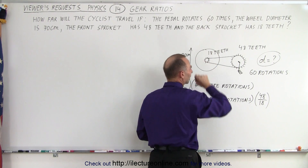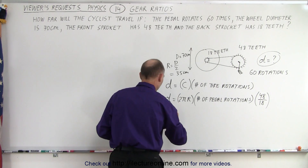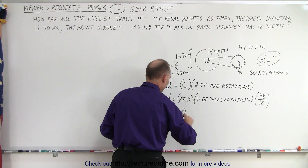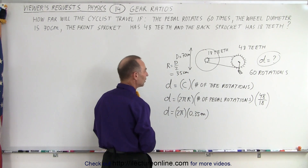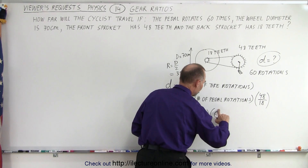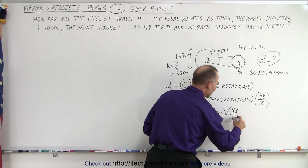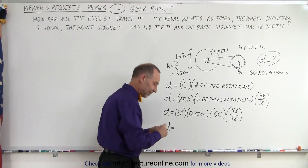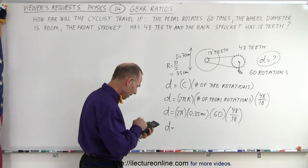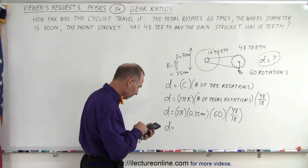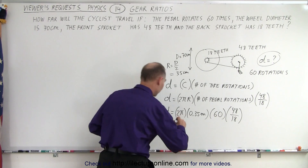Now all we have to do is plug in the numbers. Distance is equal to 2π times the radius, which is 0.35 meters (converted from centimeters), times the number of pedal rotations which is 60, times the ratio of 48 over 18. So: 2 × π × 0.35 × 60 × (48/18) gives us 352 meters of distance — the total distance traveled by the cyclist after 60 rotations.